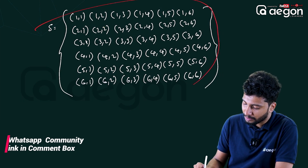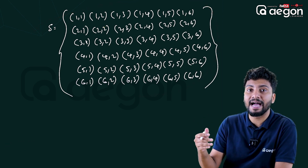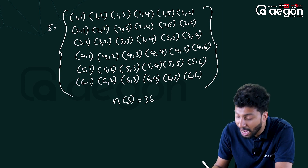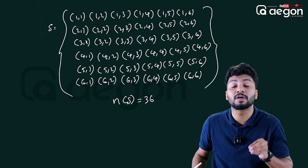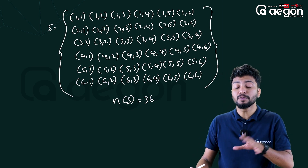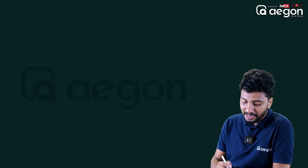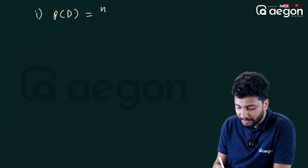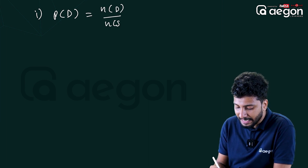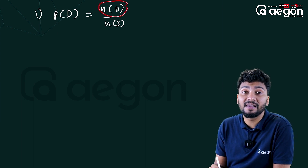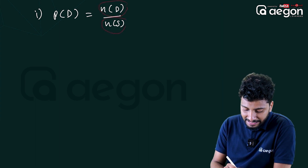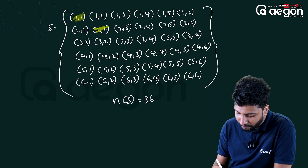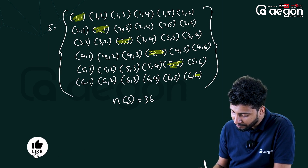The sample space for two dice consists of all ordered pairs. The total sample space has 36 outcomes.